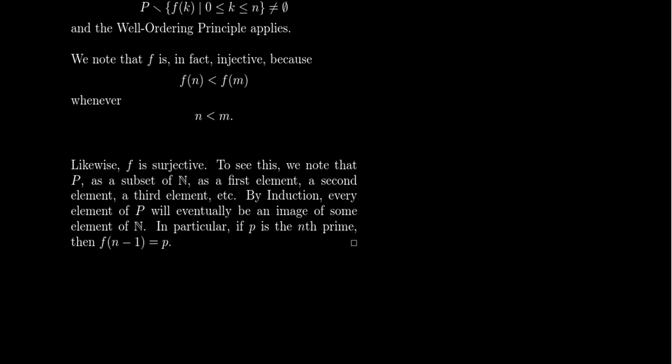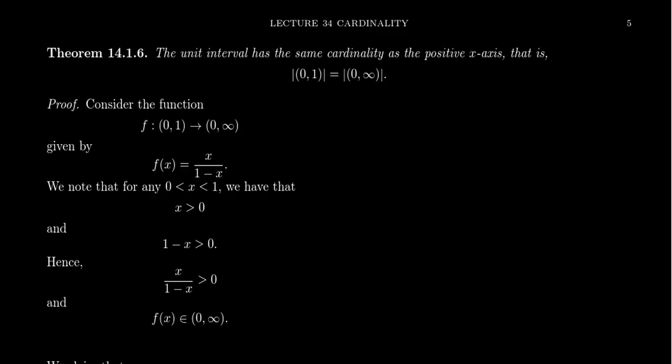If you modify this proof, you can show that any infinite subset of the natural numbers has the same cardinality as ℕ itself. You construct a recursive function grabbing the smallest element, then the second smallest, and so on. Since the set is infinite, this process never ends and you get a bijection. I'll leave it to the viewer to prove that every infinite subset of the natural numbers has the same cardinality as ℕ. We've now shown ℕ has the same cardinality as the positive integers, the primes, any infinite proper subset, and the integers.